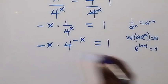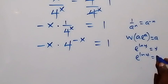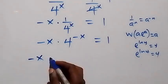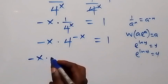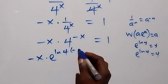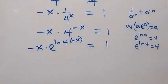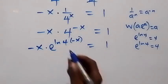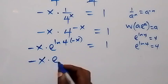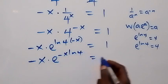So 4 can be written as e raised to the power ln 4. That means we have minus x multiplied by e^(ln 4) then raised to the power minus x, equals 1. That is, minus x multiplied by e^(minus x · ln 4) equals 1.